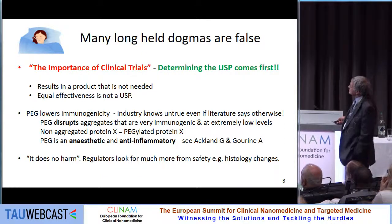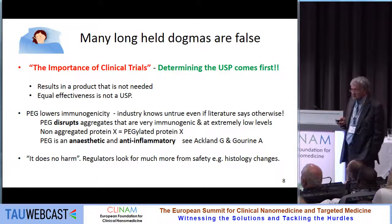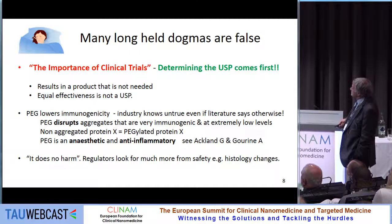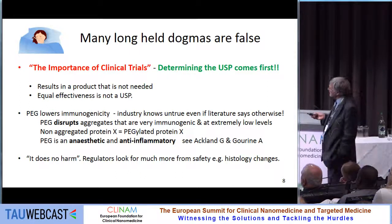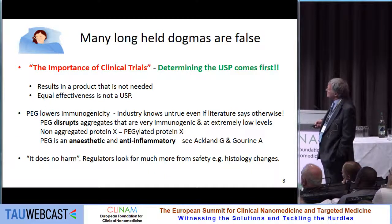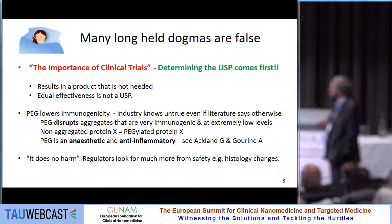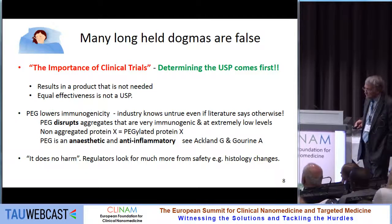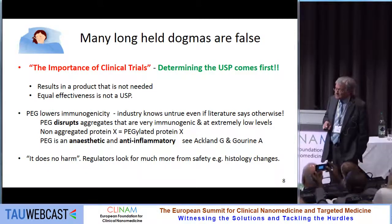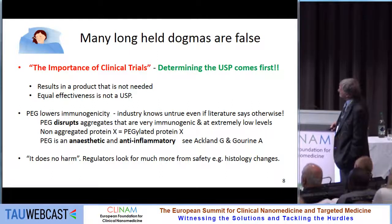Another common dogma: PEG lowers immunogenicity. Industry knows this is untrue, even if the literature says otherwise — this is a constant, reoccurring theme. What PEG does do well is disrupt aggregates, which are very immunogenic, at very low levels. But if you look at a non-aggregated protein X, it's equivalent in terms of immunogenicity to a PEGylated protein X. People also say PEG is neutral, but it's in fact an anaesthetic and has anti-inflammatory properties, and also produces antibodies or binds to natural antibodies on its surface.